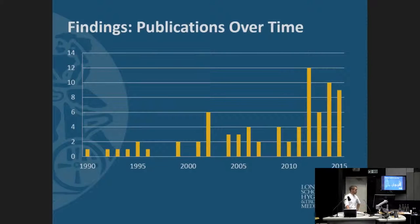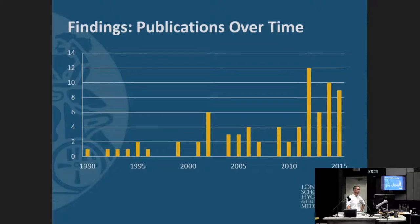This slide shows you the trend in publication over time. The first study we found was published back in 1990, and you see a reasonably positive trend towards further publication in the last five to ten years. Most of these studies since 2010 are from the Middle East, and many of the more recent studies relate to the Syria crisis more specifically.